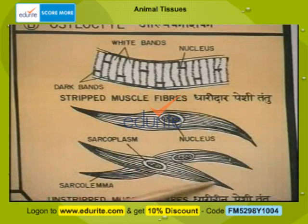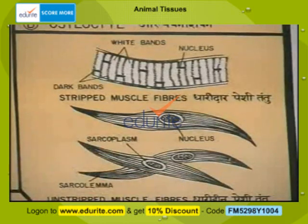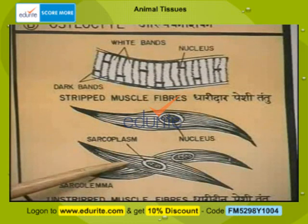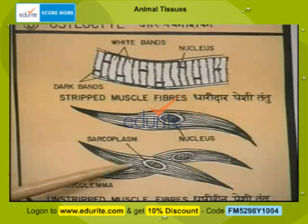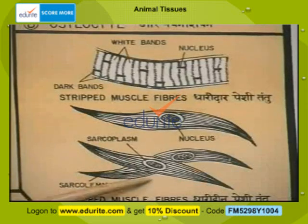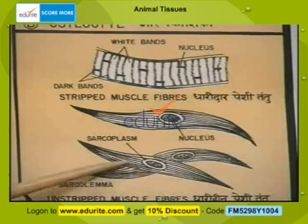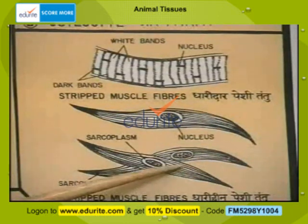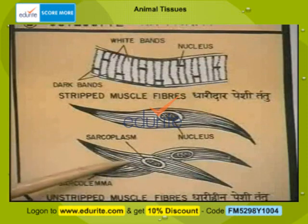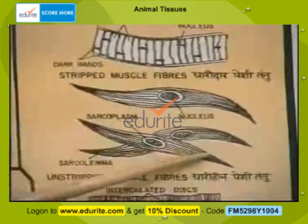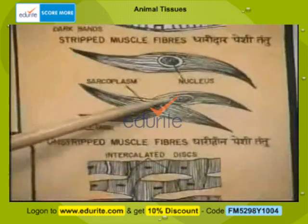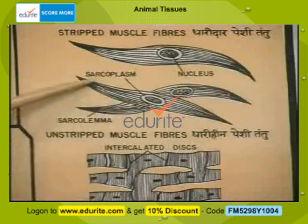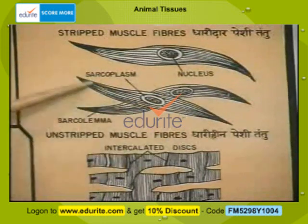Smooth muscle fiber, or non-striated muscle fiber, is also called involuntary muscle fiber. This is found inside various organs of the intestinal tract and the urinary system where involuntary action is required. These fibers are unicellular with a central spherical nucleus, and each fiber is spindle-shaped or tapering at both ends.